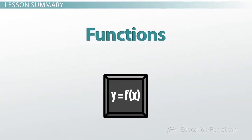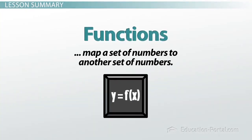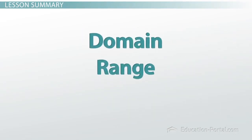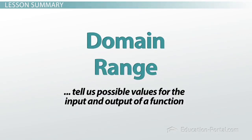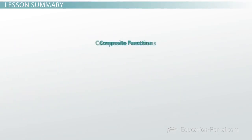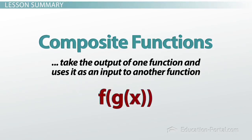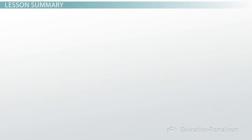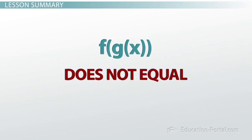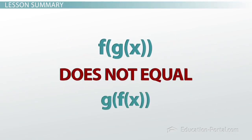To recap: functions map numbers to other numbers, like y equals f of x. The domain and range describe possible input and output values. Composite functions take the output of one function as input to another, written as f of g of x. We evaluate from the inside out — g of x before f of x — and f of g of x is not equal to g of f of x.